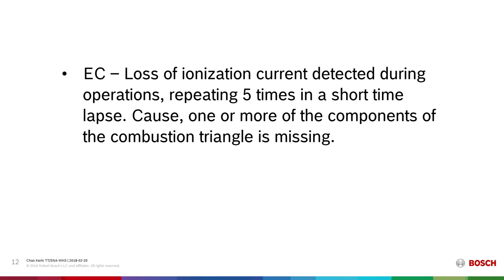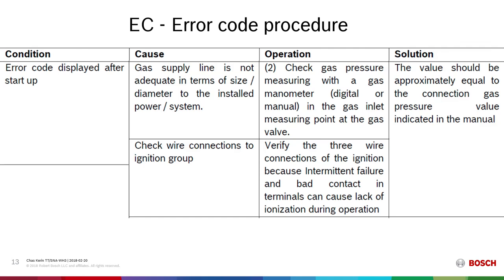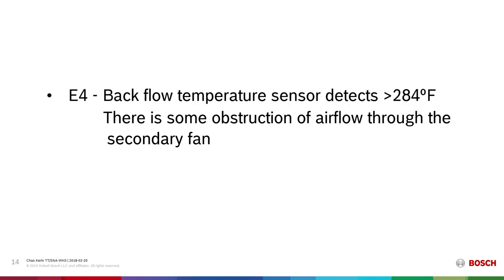EC is a close cousin of EA. EC says that the unit was operating and — repeating five times in a short period of time — it lost flame. Again, the cause is one or more components of the combustion triangle missing. If that error code displays after startup, check gas pressure. Are we maintaining gas pressure? Is there LP in the propane tank? Make sure that the gas line is adequate and that no other appliances have been added that are reducing the gas supply to the unit. Verify that the unit is not extended beyond vent length, or that the exhaust or intake is not over length.